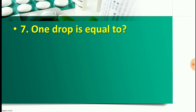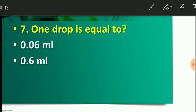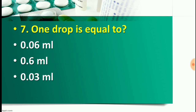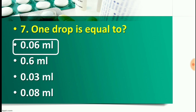Question number seven: One drop is equal to how many ml? Option A: 0.06 ml, Option B: 0.6 ml, Option C: 0.03 ml, or Option D: 0.08 ml. The right answer is Option A — 0.06 ml. So one drop is equal to 0.06 ml.